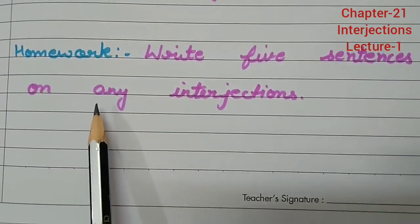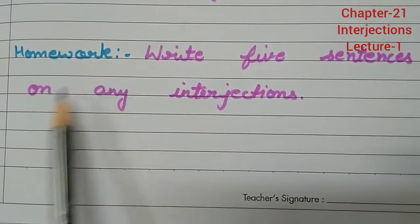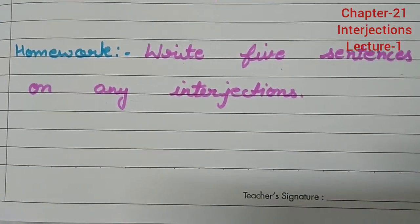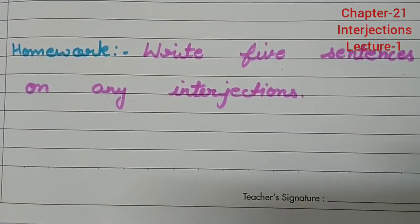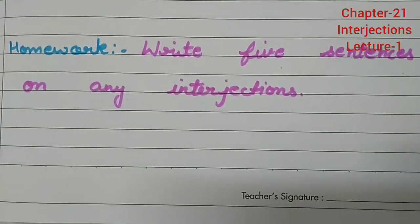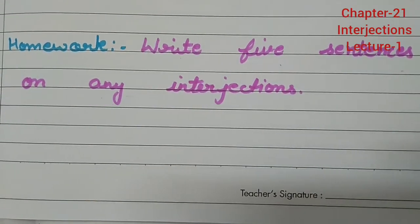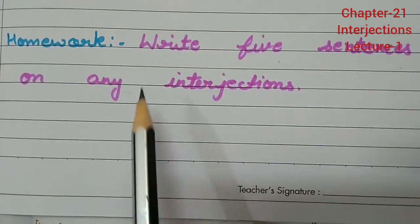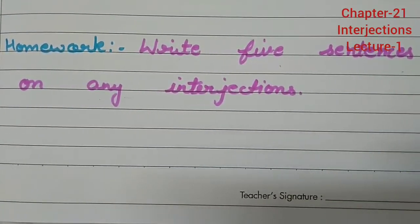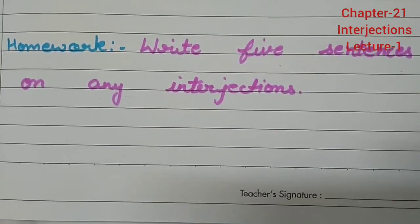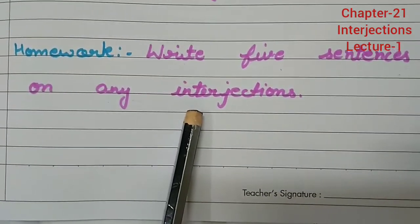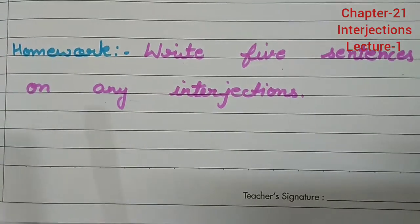As you have also completed the Interjections chapter, write 5 sentences on any interjection — for example, you can write for 'bravo,' 'alas,' 'hurrah,' 'yippee,' 'oops,' or 'wow.' Make sentences using any interjection. So these two homework tasks: Exercise 4 of Chapter 20 is to be done in the book, and the 5 sentences on interjections are to be done in your notebook.